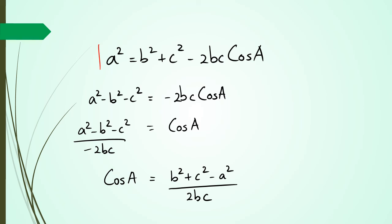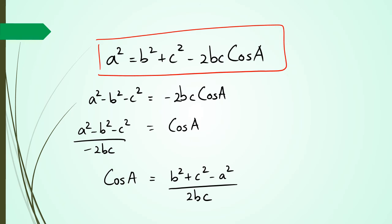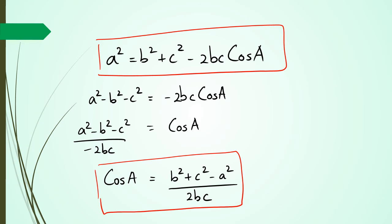So the two formulas we're going to be working with for the cosine rule are: one to find the missing side, and one for the missing angle. And that's basically it for this session, folks. Thank you for watching — any questions, pop them in the comments below.